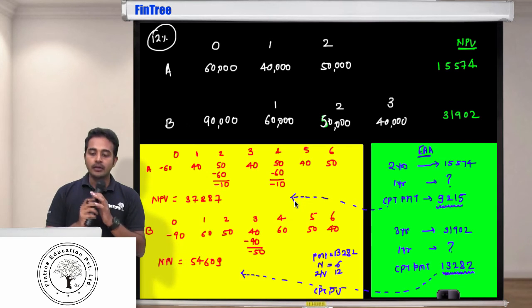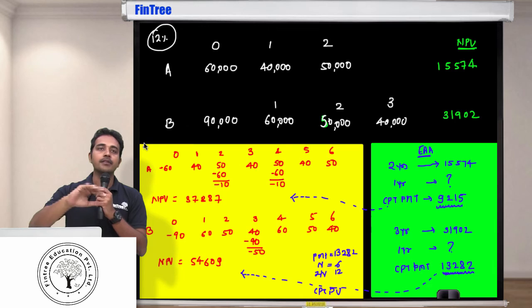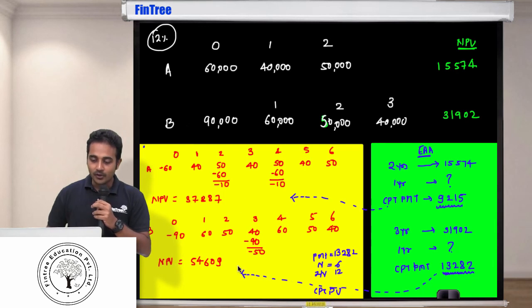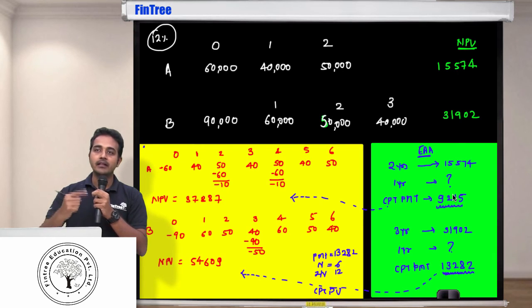Therefore, even on the exam, if they ask you to use this method and if they ask you to find out what would be the NPV if you do this project for six years, don't spend time building this sheet. The fastest way to do it is get EAA and then set that as payment and compute the present value. Do you want to ask any questions here?